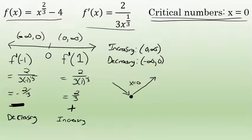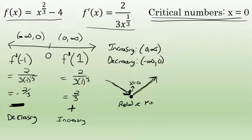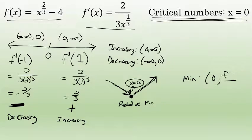This tells me that x = 0 is a relative minimum value. And because the graph is decreasing for the entire interval between negative infinity and zero and then increasing from zero to infinity, not only is this a relative minimum — it's an absolute minimum, the lowest the graph ever gets. The minimum occurs at x = 0, and substituting zero into the original function gives f(0) = 0^(2/3) - 4 = 0 - 4 = -4.